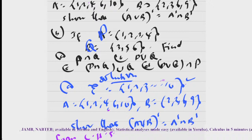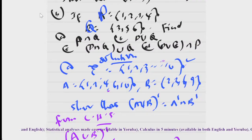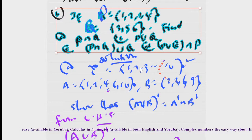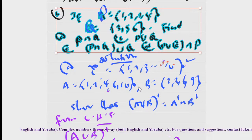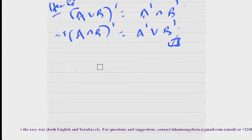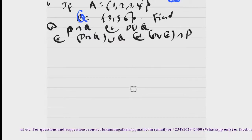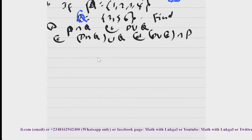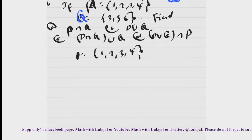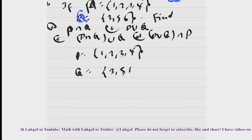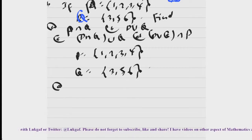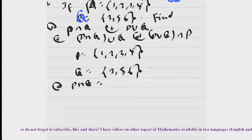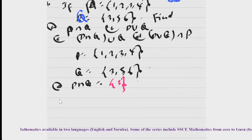If that is clear, let us do the second example. So here we have P = {1, 2, 3, 4} and Q = {3, 5, 6}. Then we have to find: number one, P intersection Q. The common element to P and Q — I think that's just three.